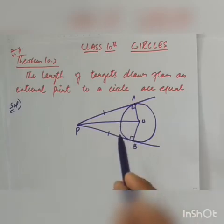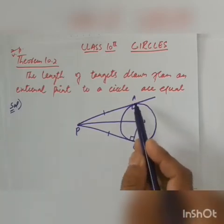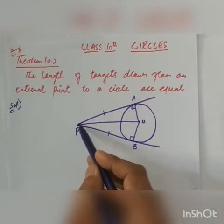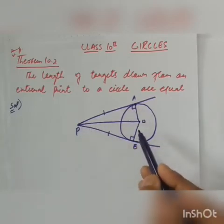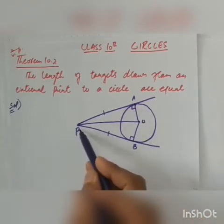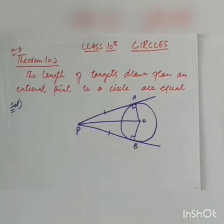We can see that in this figure we have two right-angle triangles: triangle OAP with the right angle at A, and triangle OBP with the right angle at B. We will prove it by the congruency method.